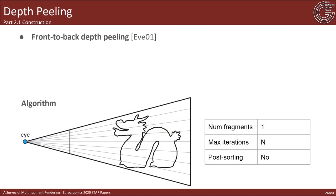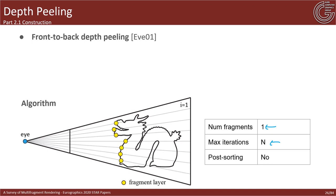Probably the most well-known iterative MFR technique is front-to-back depth peeling. This method works by rendering the geometry multiple times and extracting a single fragment layer per iteration in ascending depth order. The algorithm starts by rendering the scene as usual, writing the closest fragment to the depth buffer, then proceeds iteratively to record the next closest fragment. The process stops when the maximum number of iterations is reached or no more fragments are generated.